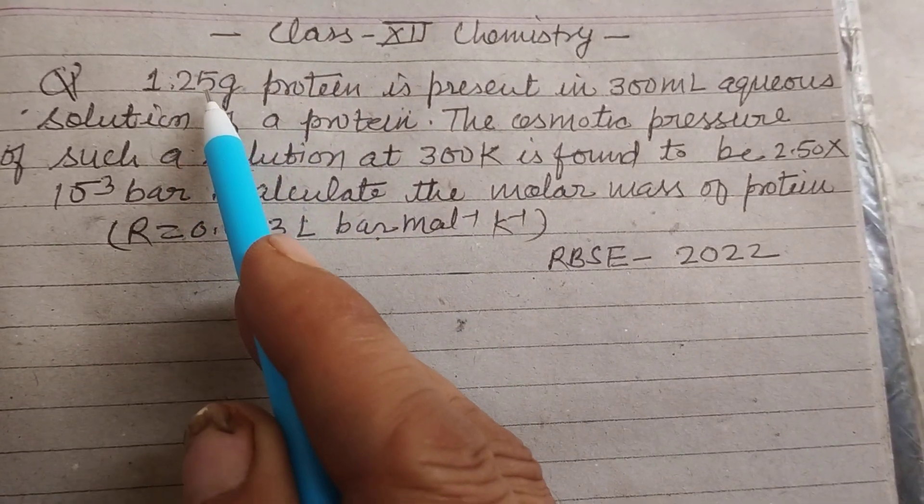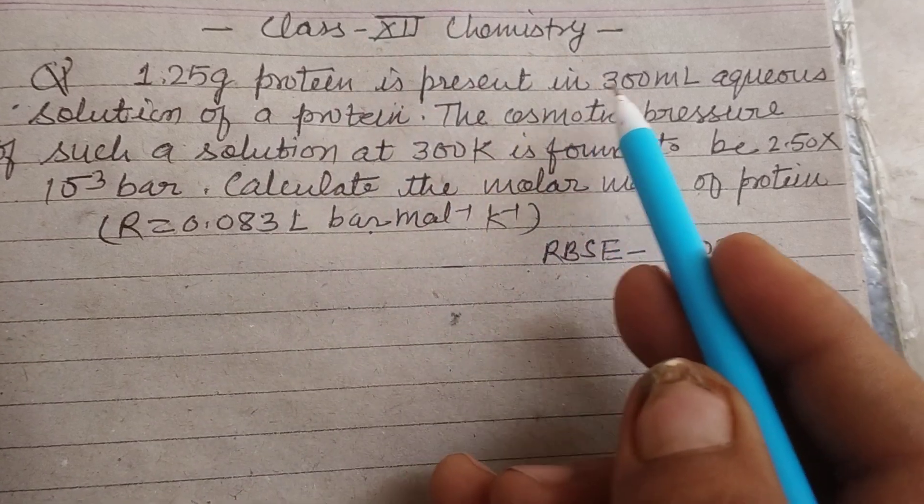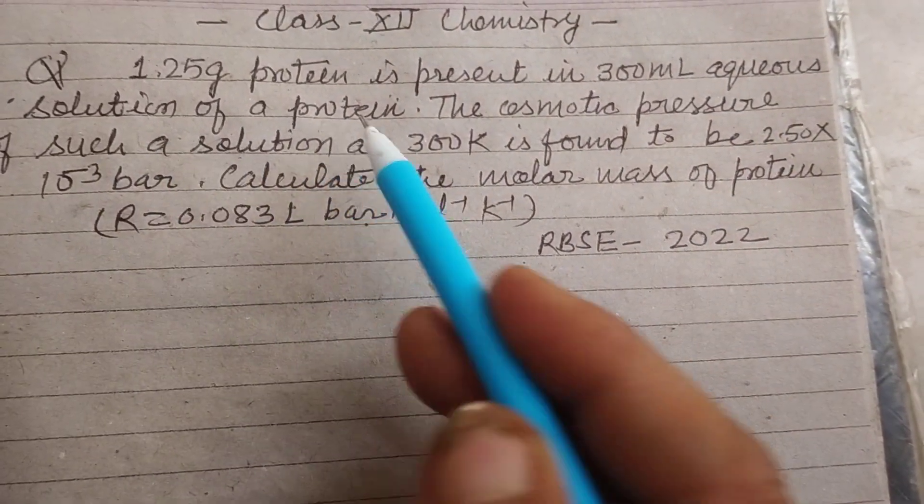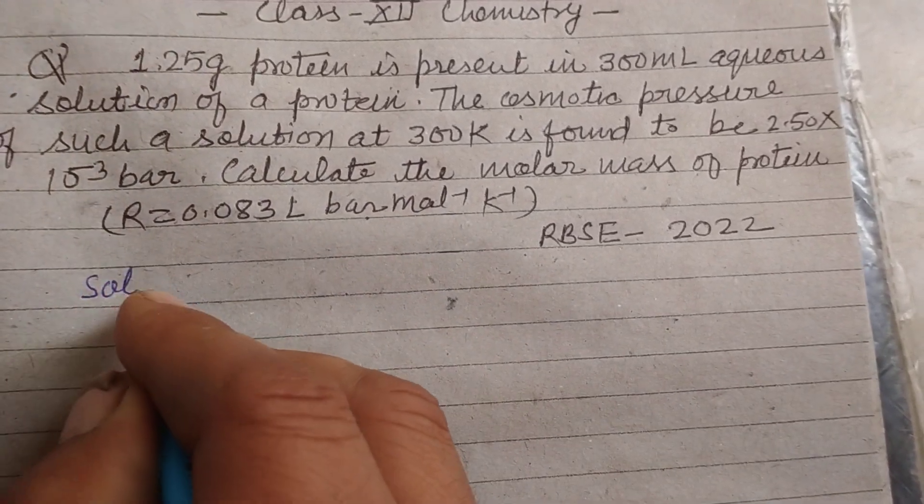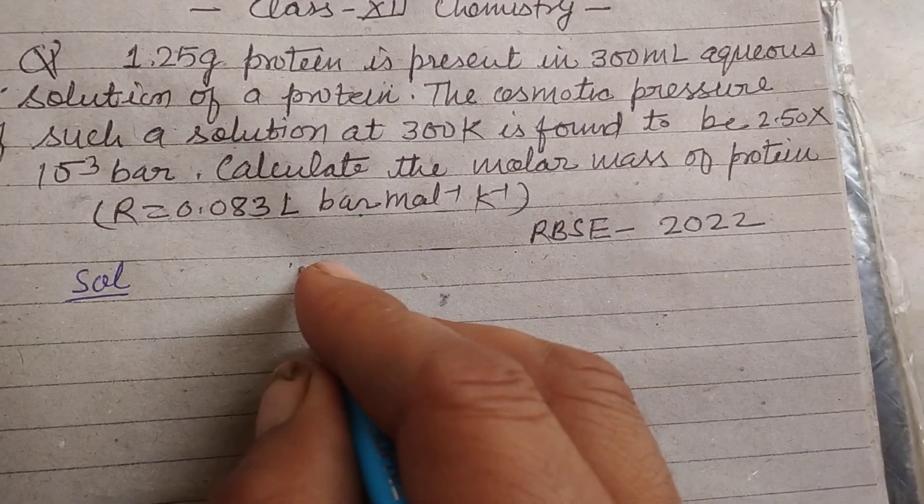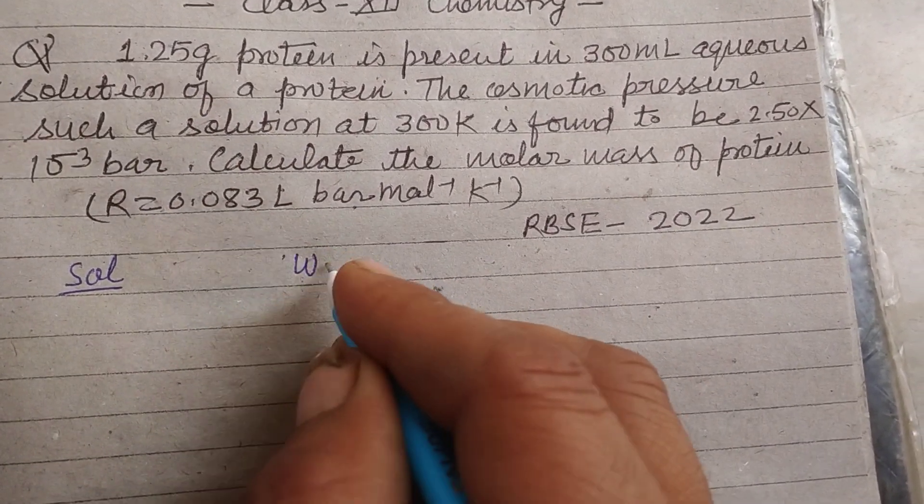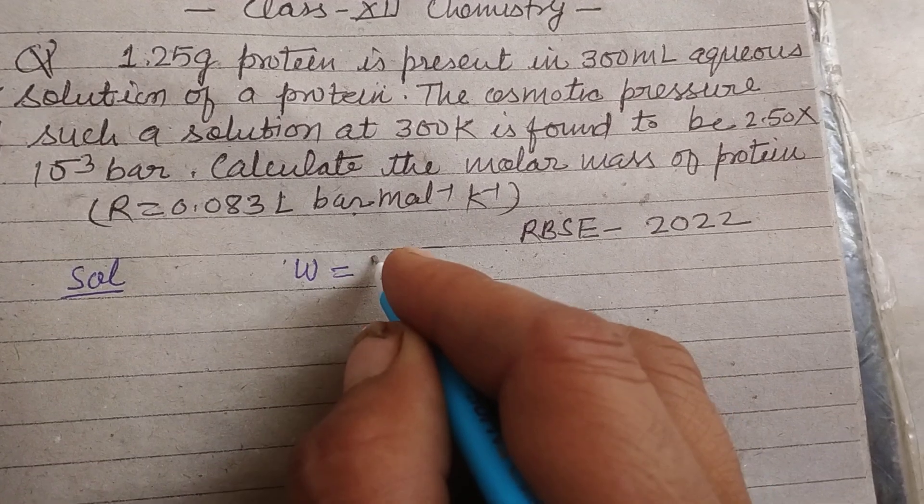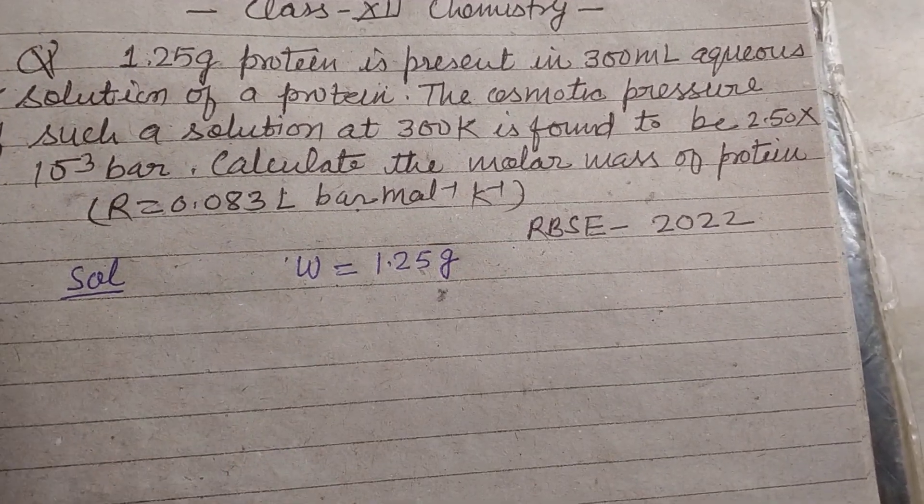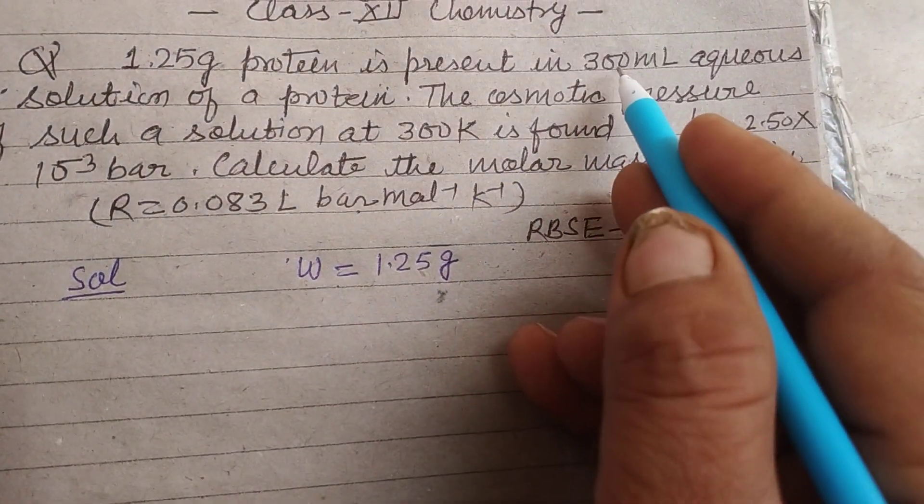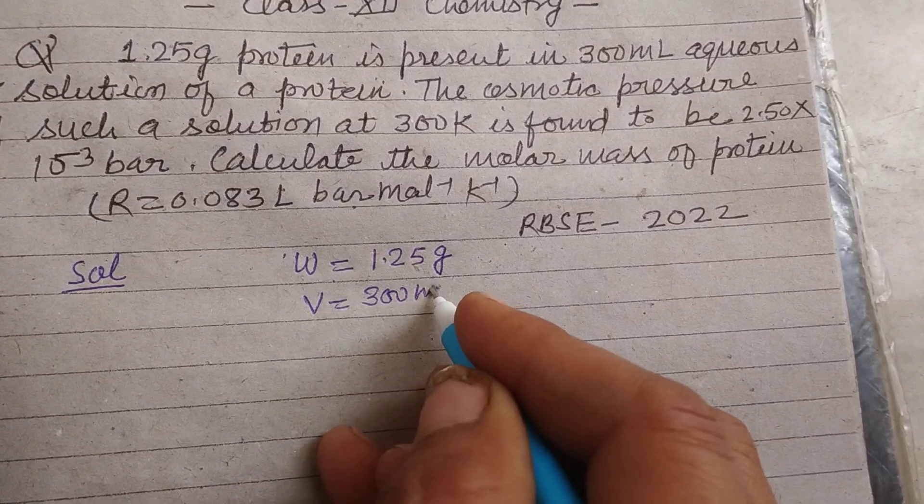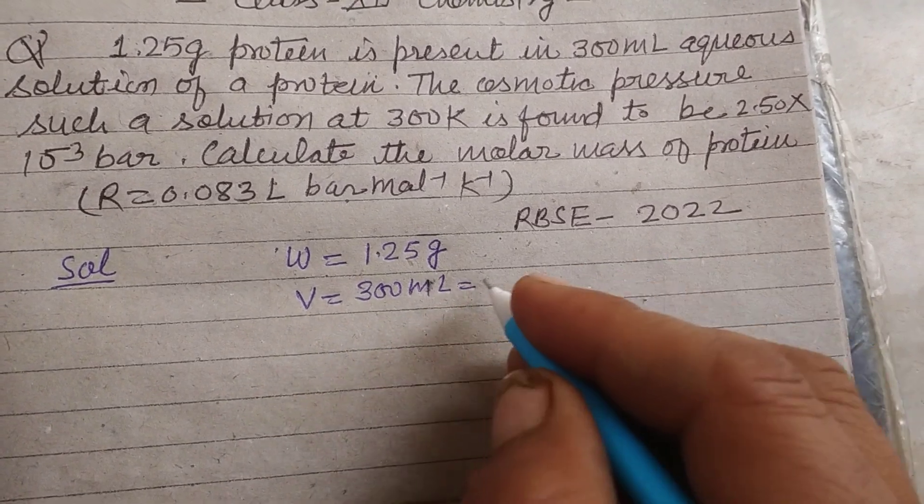1.25 gram protein is present in 300 ml aqueous solution of a protein. So here the mass of solute is given to us, 1.25 gram protein, and volume V equals 300 ml. We change it to liters, so 300 upon 1000 liter.